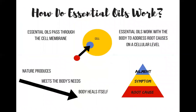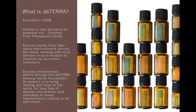I want to unpack a bit more about how essential oils work. When we have an ailment, threats reside inside our cells, and essential oils are able to pass through the cellular membrane — which is not always true of synthetic options. Essential oils work with our body, not against it, addressing root causes at the cellular level. When you apply an oil topically, it enters your bloodstream within two minutes, and within 20 minutes every cell in the body is affected.